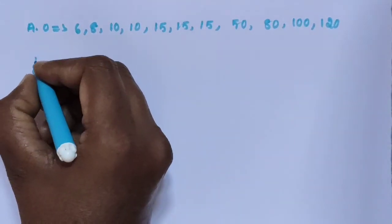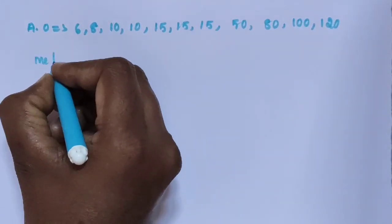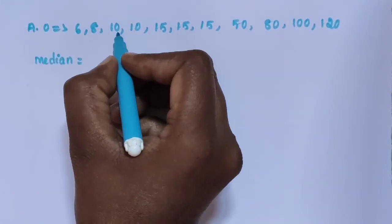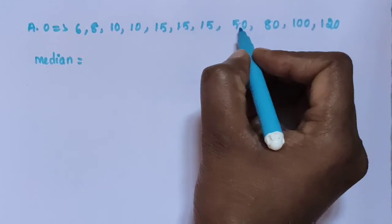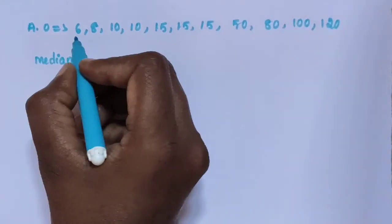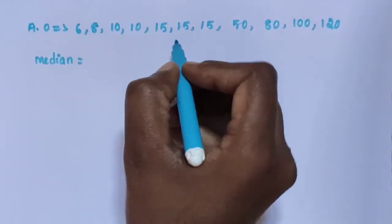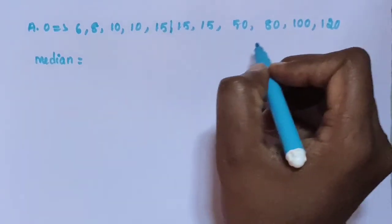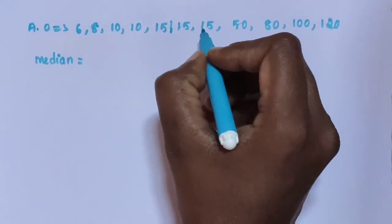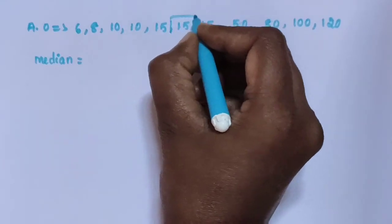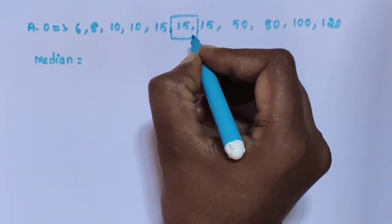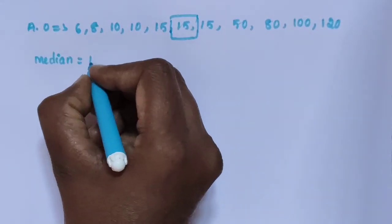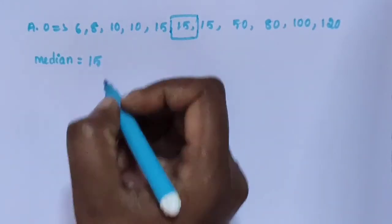Find the median. There are 11 numbers. Counting 1, 2, 3, 4, 5 from the left and 1, 2, 3, 4, 5 from the right. So 15 is the middle value of the given data. Then median is 15.